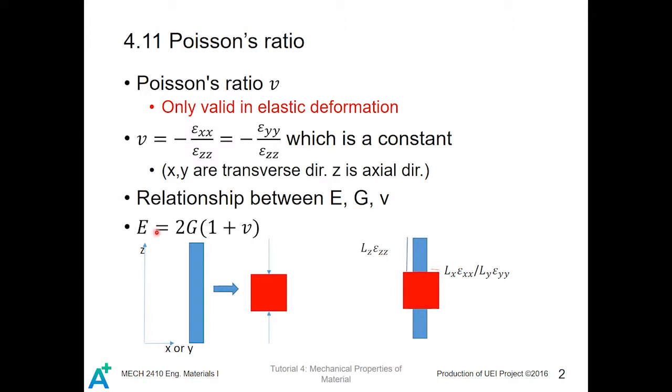And there is a relationship between E, G, and v. E is the elastic modulus, is equal to 2 times G, G is the shear modulus, times 1 plus v in brackets.